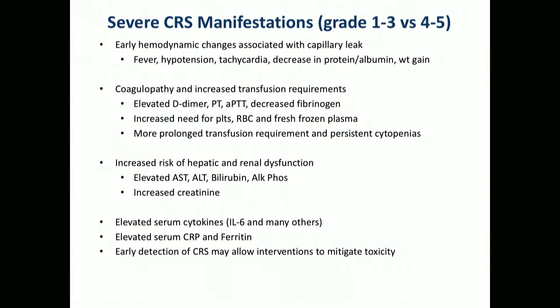The severe CRS manifestations are early hemodynamic changes. You can actually predict who's going to get CRS by their heart rate in the outpatient — they feel fine, blood pressure is fine, but they come in with a resting tachycardia of 120, which is a sign they're usually going to develop CRS. They can develop a consumptive coagulopathy and may need increased transfusion requirements. In severe cases there's a risk for hepatic or renal dysfunction, and we now do daily IL-6 levels at the University of Washington and monitor CRP and ferritin.